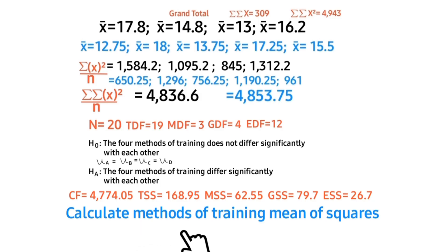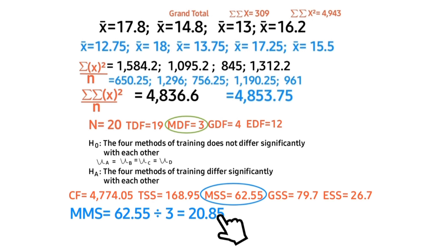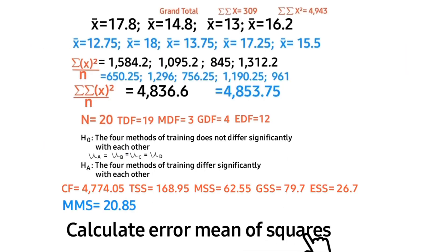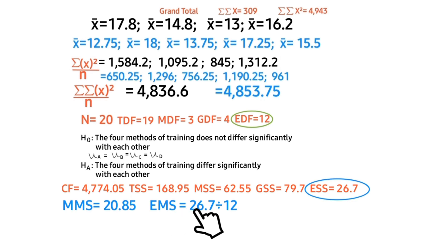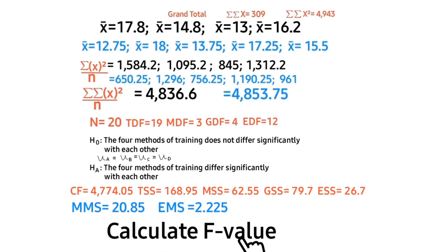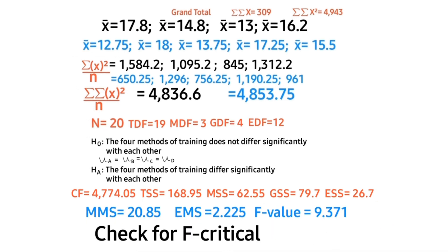Calculate the methods of training mean squares: methods MS equals methods sum of squares divided by methods degrees of freedom, giving 20.85. Calculate the error mean squares: error MS equals error sum of squares divided by error degrees of freedom. Calculate the F-value: F equals methods mean squares divided by error mean squares.